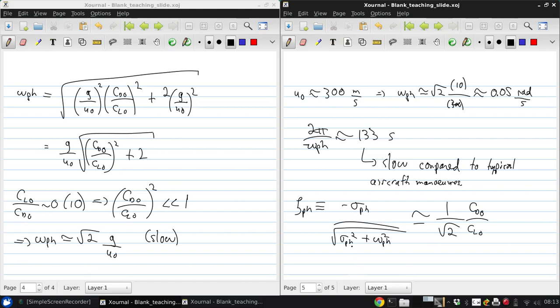So since modern aircraft have good L over D, so CL0 over CD0 is again as we just discussed maybe on the order of 10 to 16, then that means that the fugoid damping ratio is about 1 over root 2 times 1 over 16, which is again about 0.05.